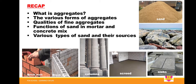We also talked about the types of sand and where they can be derived. We encountered pit sand, sea sand, and river sand. Pit sand is obtained from sandy areas, river sand is obtained from river banks, and sea sand is obtained from the seashore.